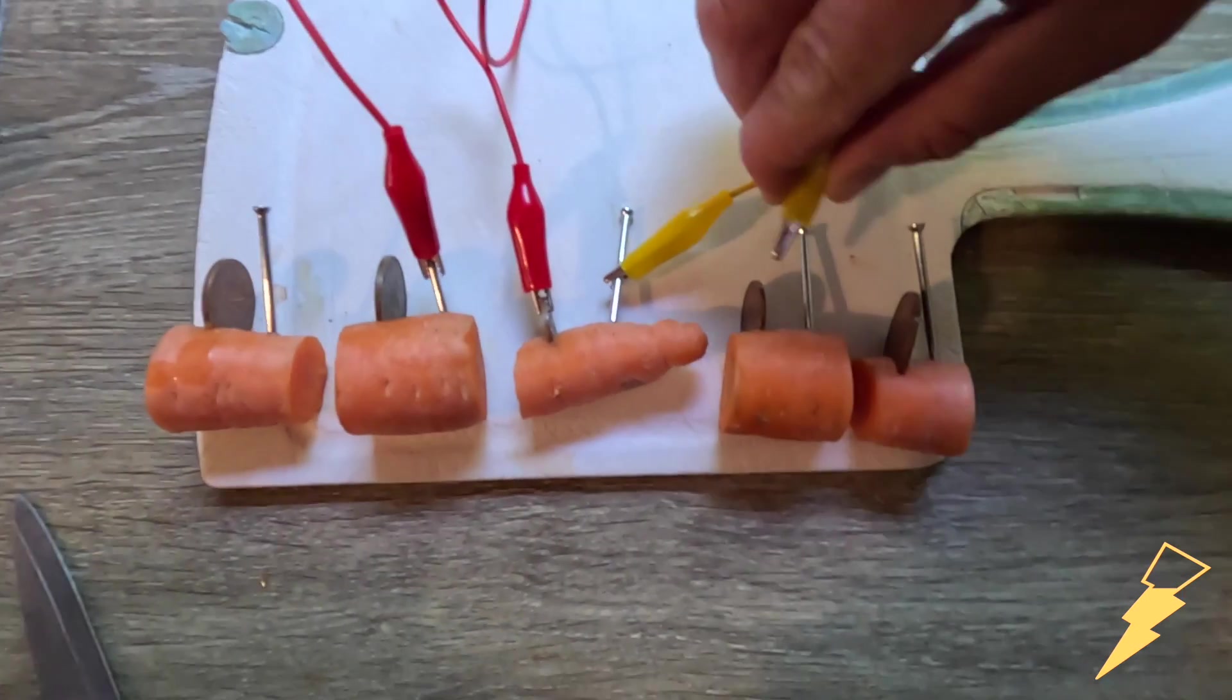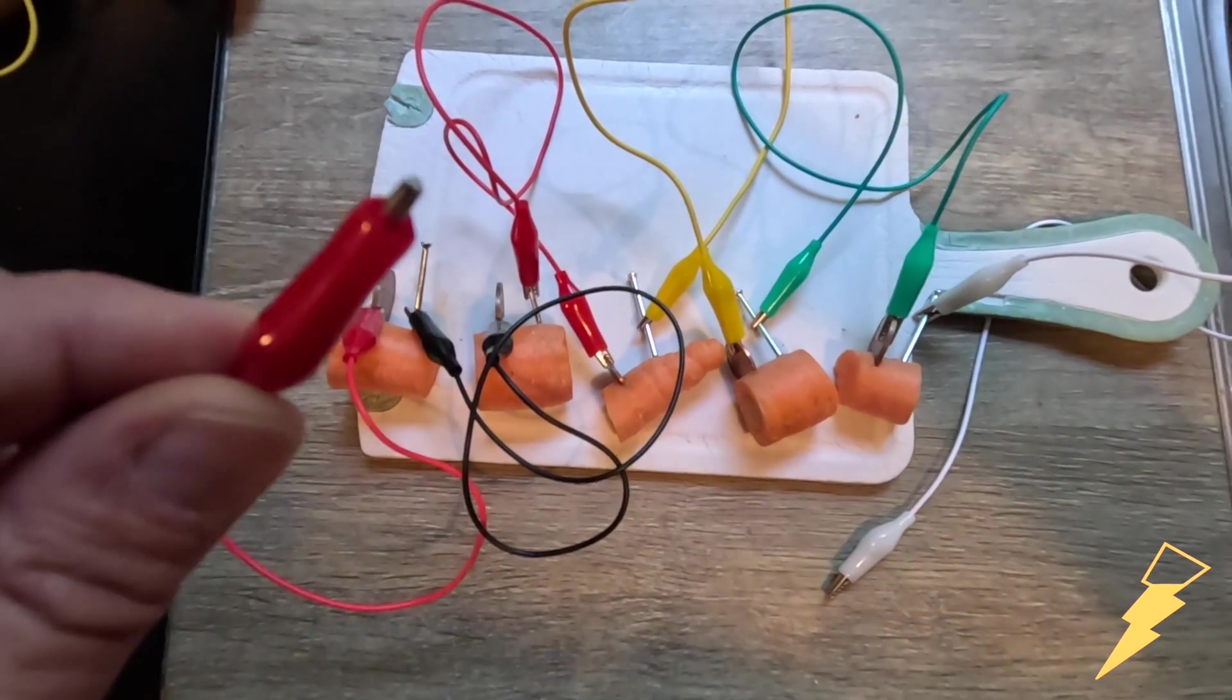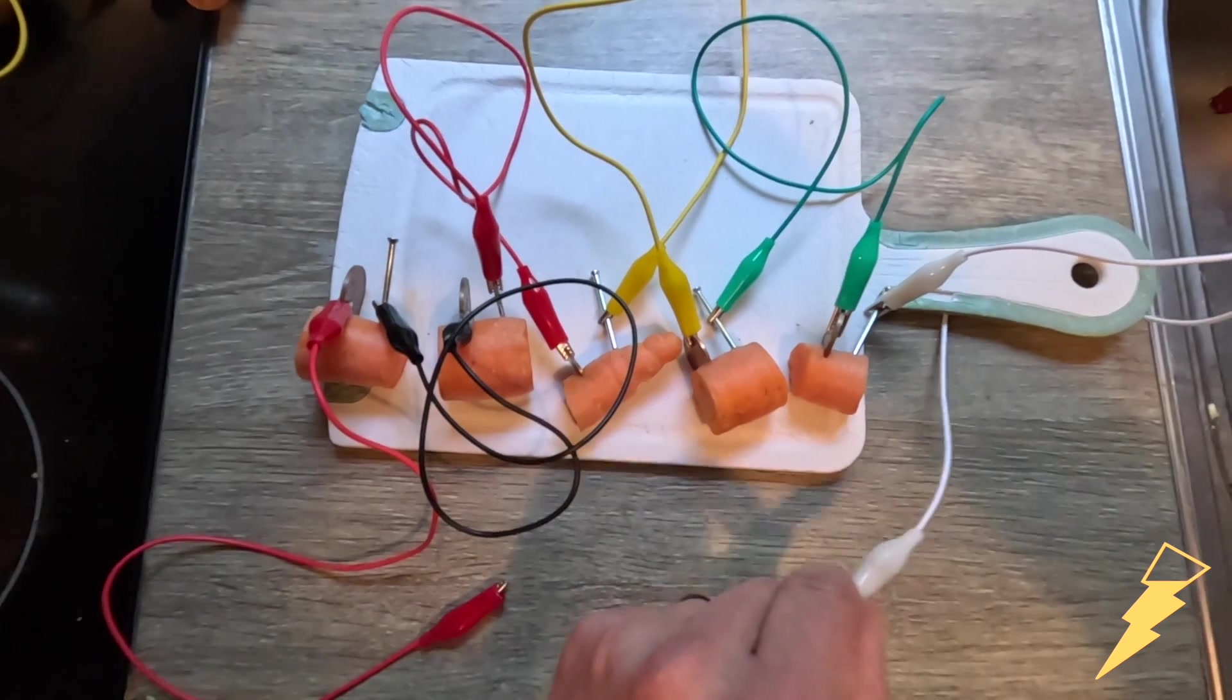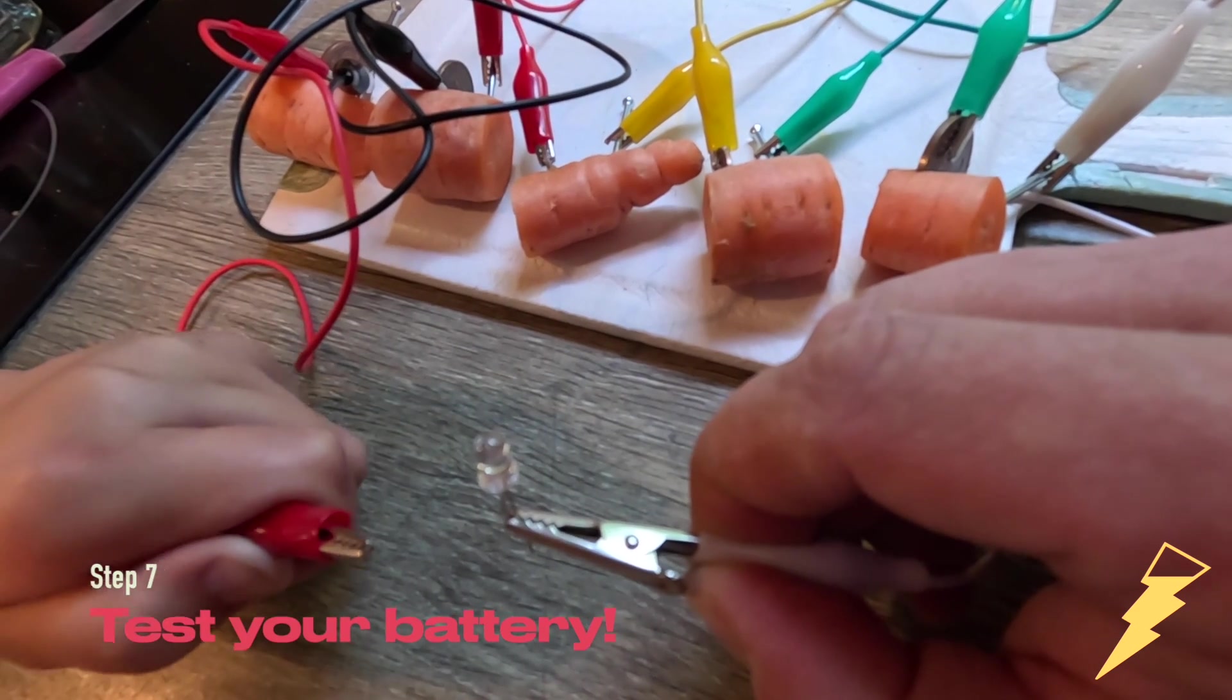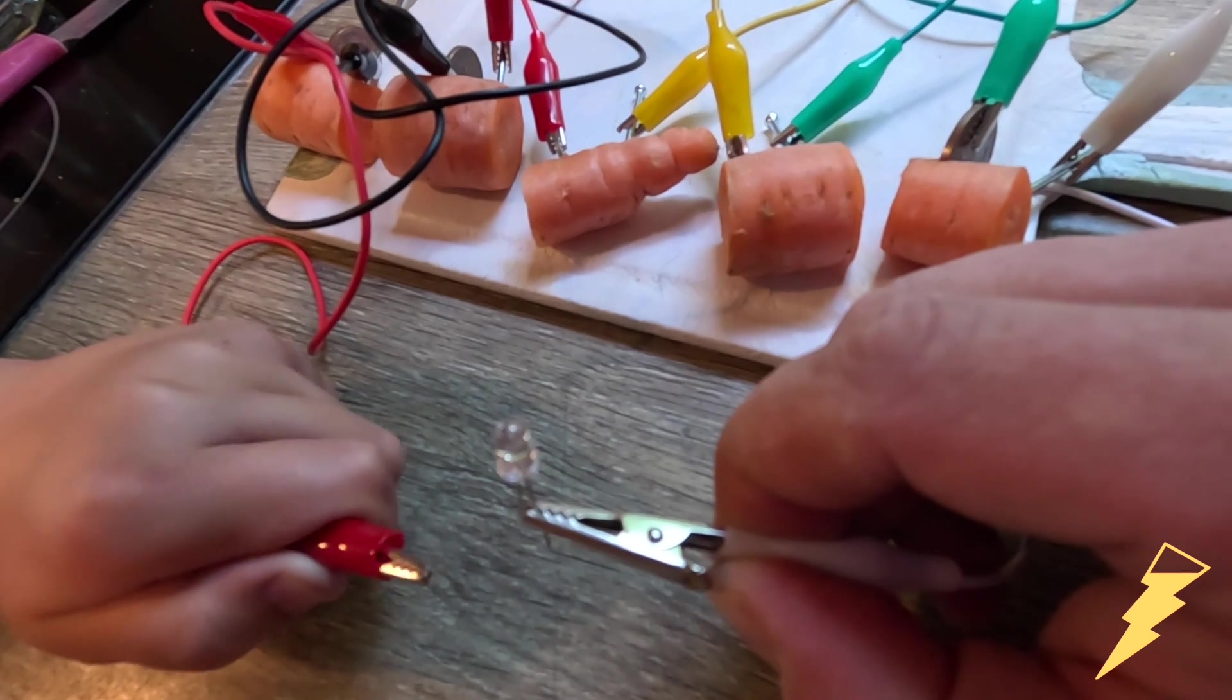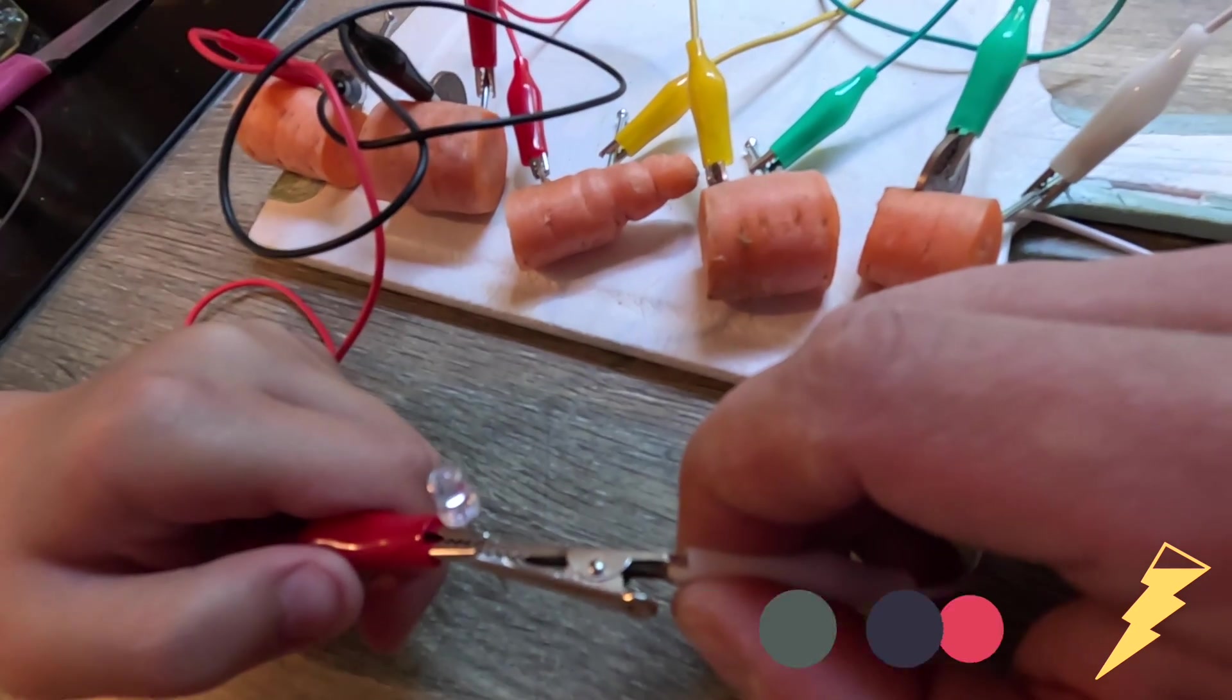We've now connected up our five carrot cells and we've got two loose wires. One is connected to a copper coin and the other connected to a zinc nail. Now time to connect them to the LED. Connect the shorter leg of the LED to the zinc nail and the copper coin to the long leg of the LED. The light comes on now because you've got five carrot cells rather than one. Why don't you experiment with different numbers of cells?